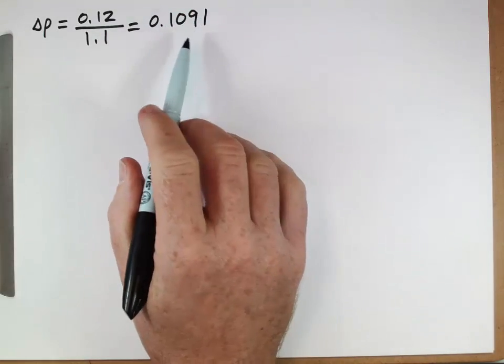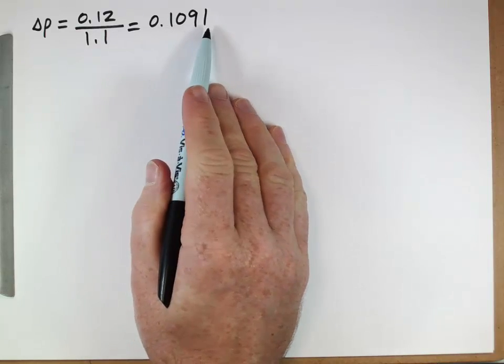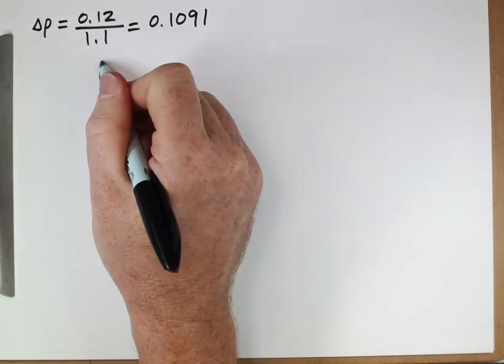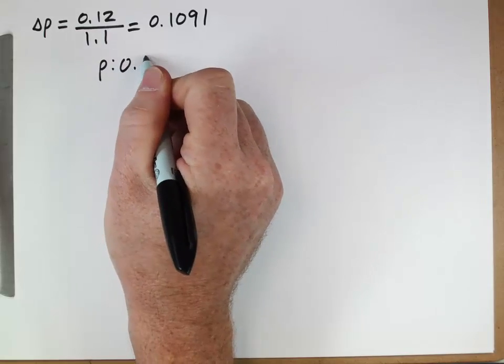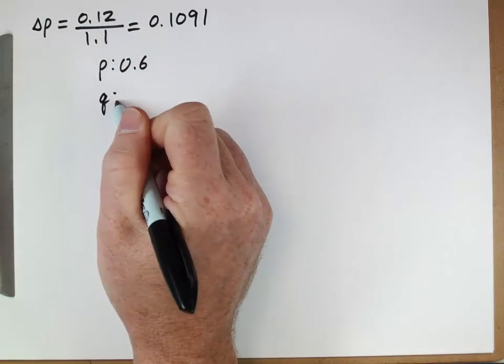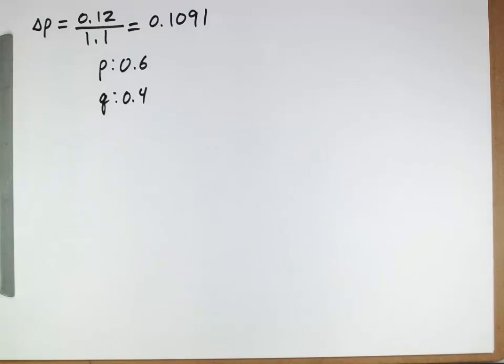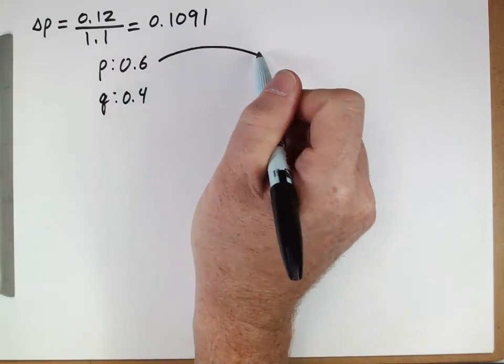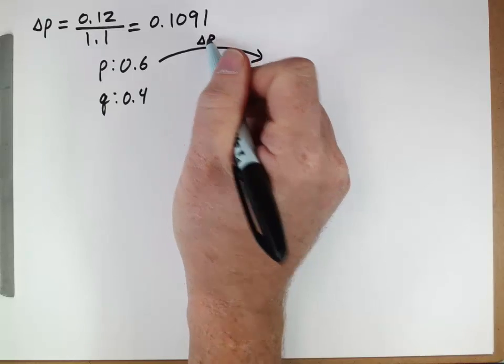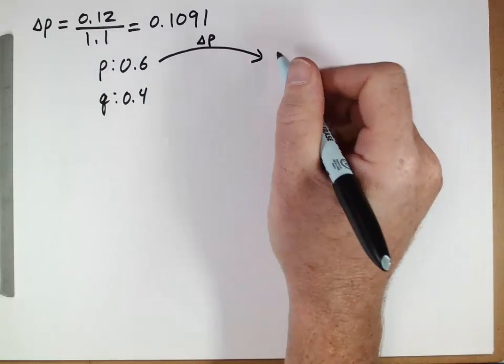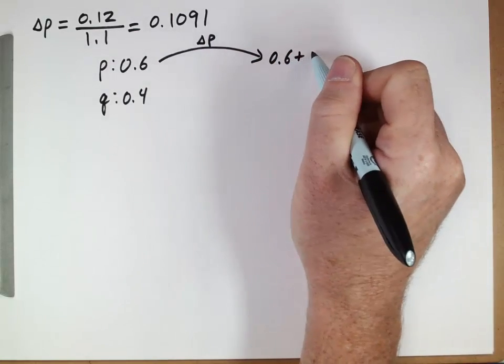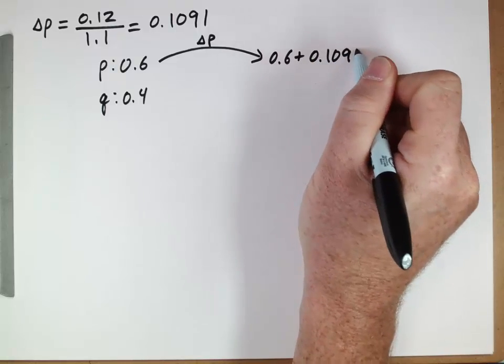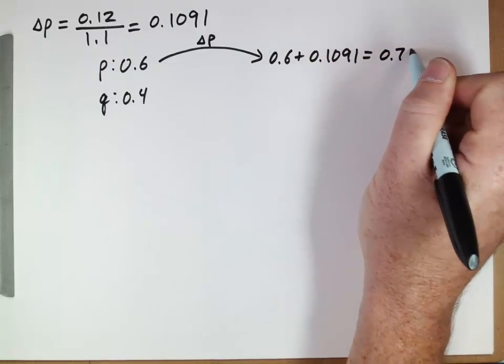So what does this mean? Delta p is 0.1091. That means that we had our starting value of p, which was 0.6, and our starting value of q, which was 0.4. 0.6 has now changed because of the delta p. So the new value is 0.6 plus 0.1091, 0.7091.